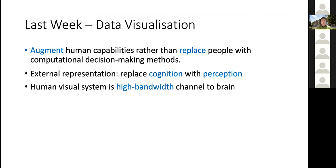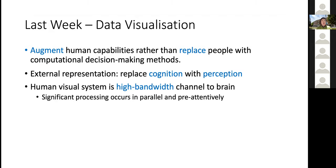The reason we pick visual systems instead of other systems — for example sound, smell, taste, or touch — is because the visual system has much higher bandwidth compared to the other senses. It can process lots of data in parallel, and some of this can be done pre-attentively, in the sense you don't even have to engage the brain consciously — it's kind of hardwired.